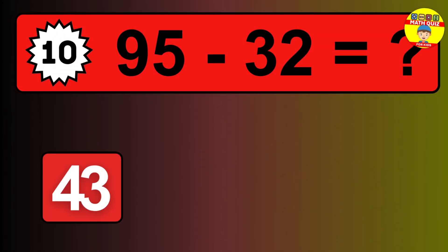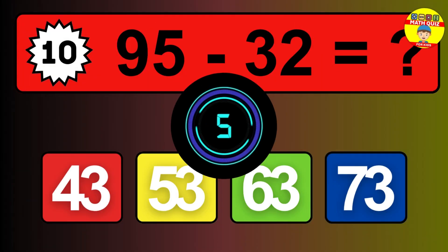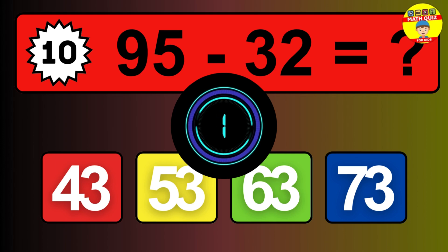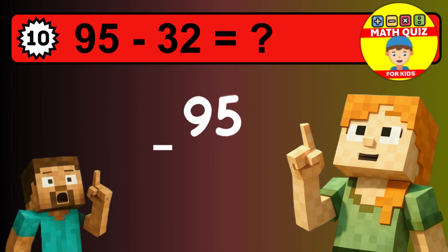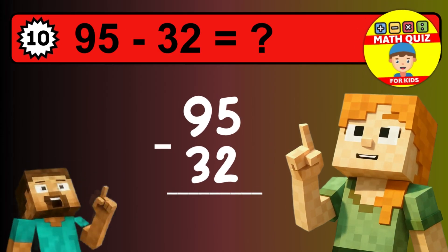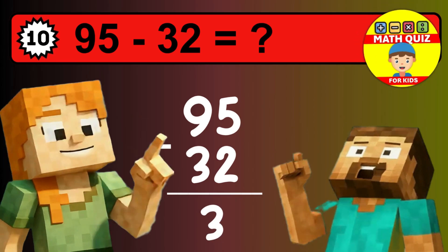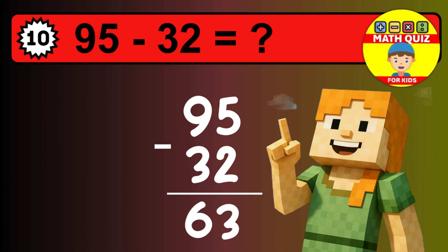What is 95 minus 32? Time to think. Let's solve this step by step. We start with the units: 5 minus 2 is 3. Then we go to the tens: 9 minus 3 is 6. The final answer is 63.